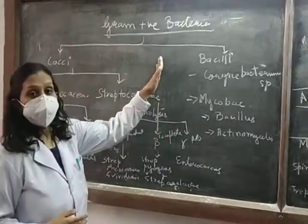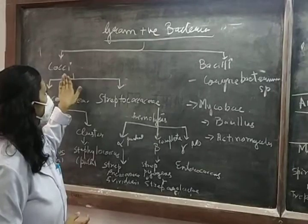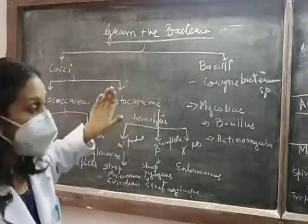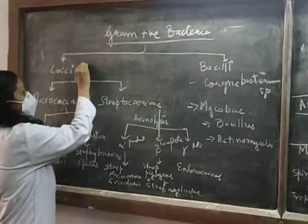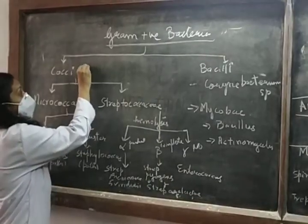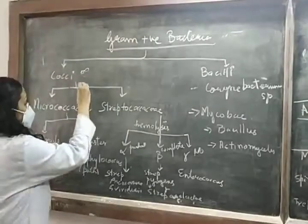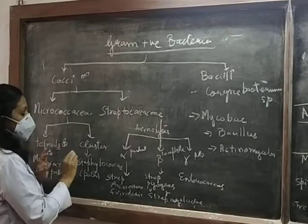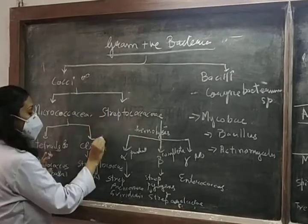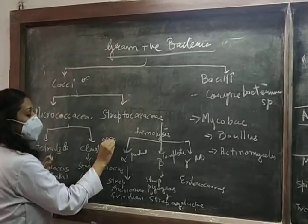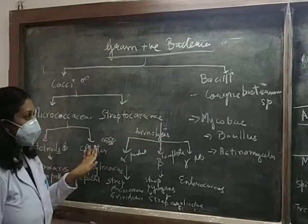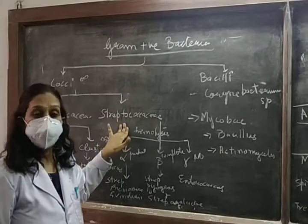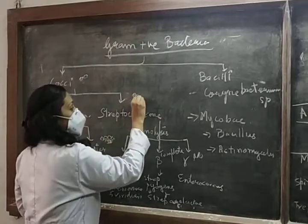Gram-positive bacteria are divided into cocci and bacillus. Cocci are round structures. They can be in tetrad formations, they can be in clusters like grapes, and they can also be in chains.